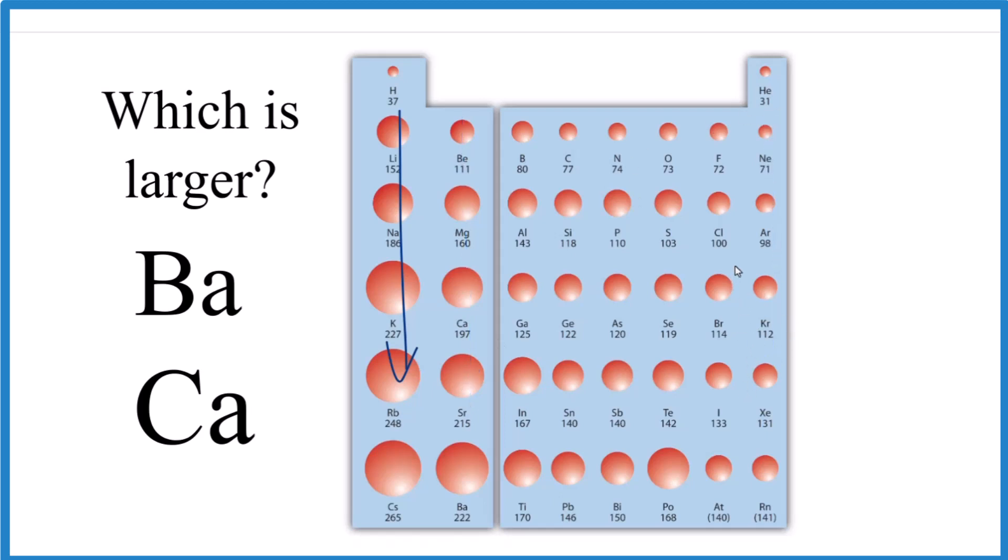As we go across periods or rows on the periodic table, the atoms get smaller. The atomic radius decreases.